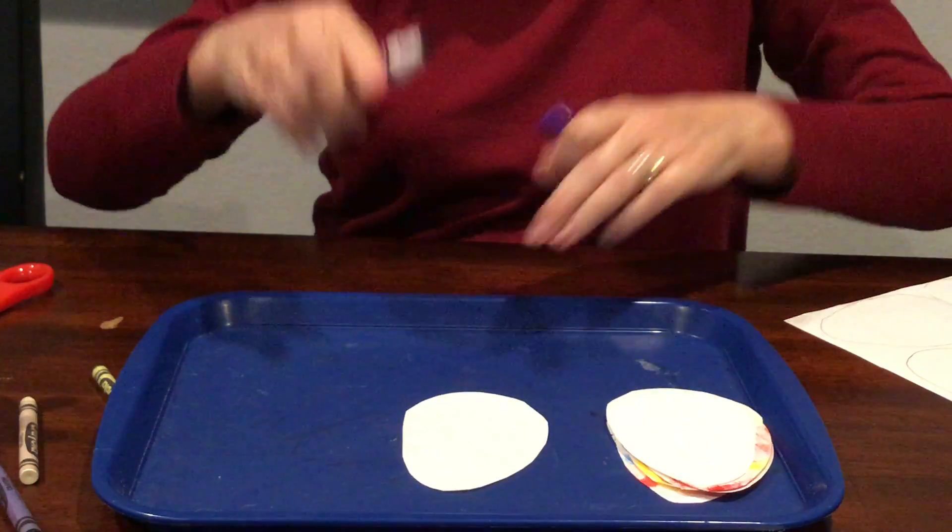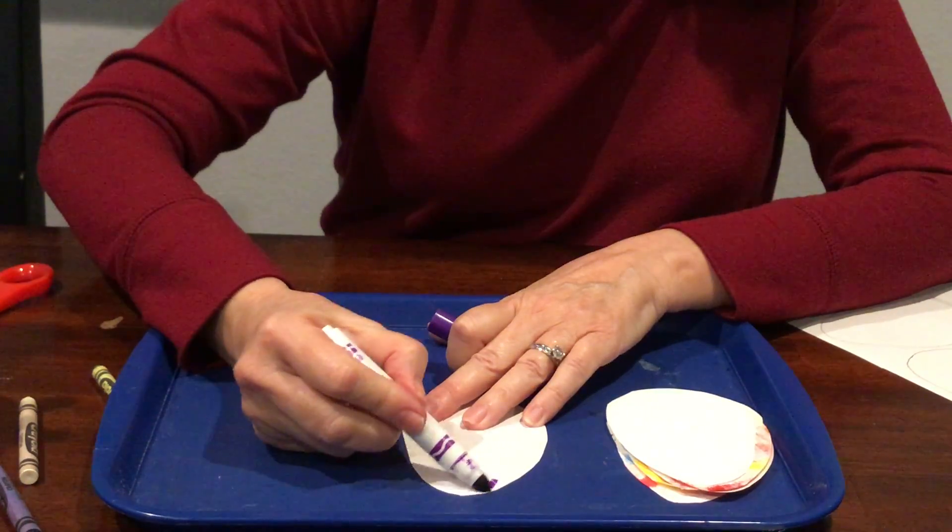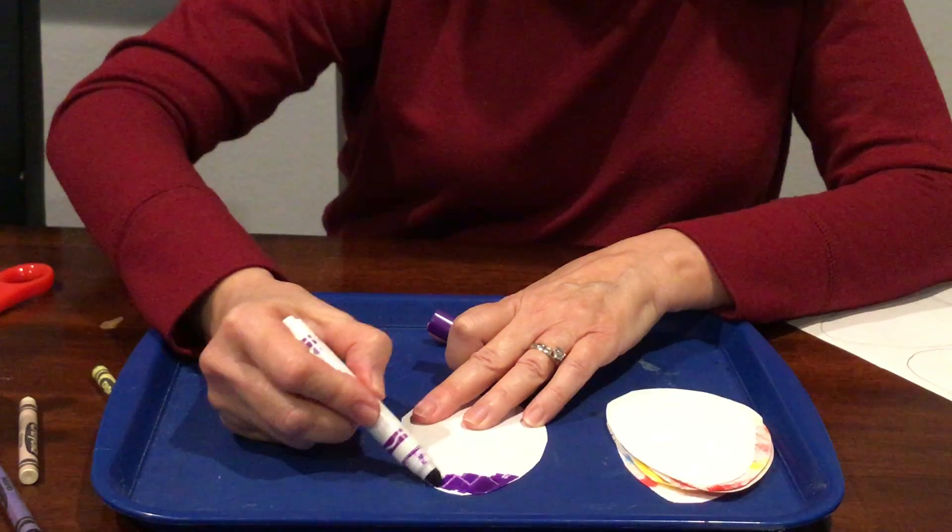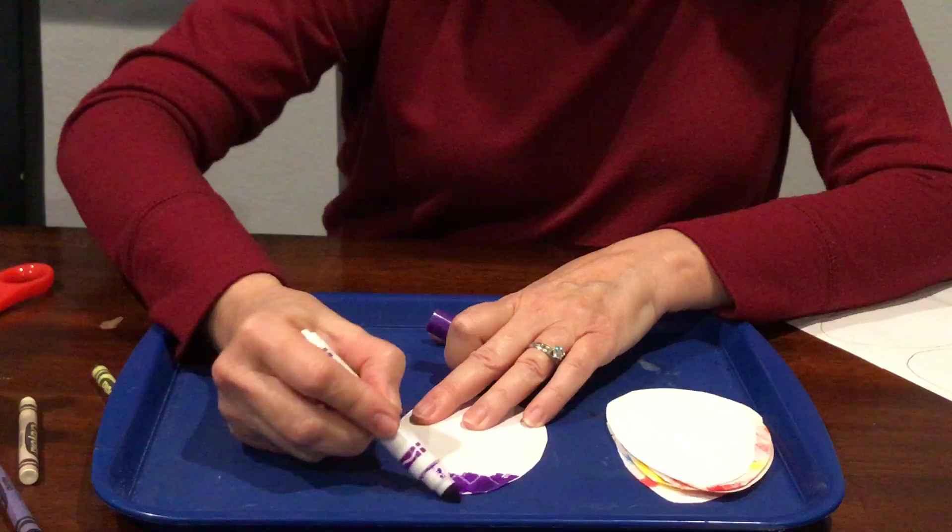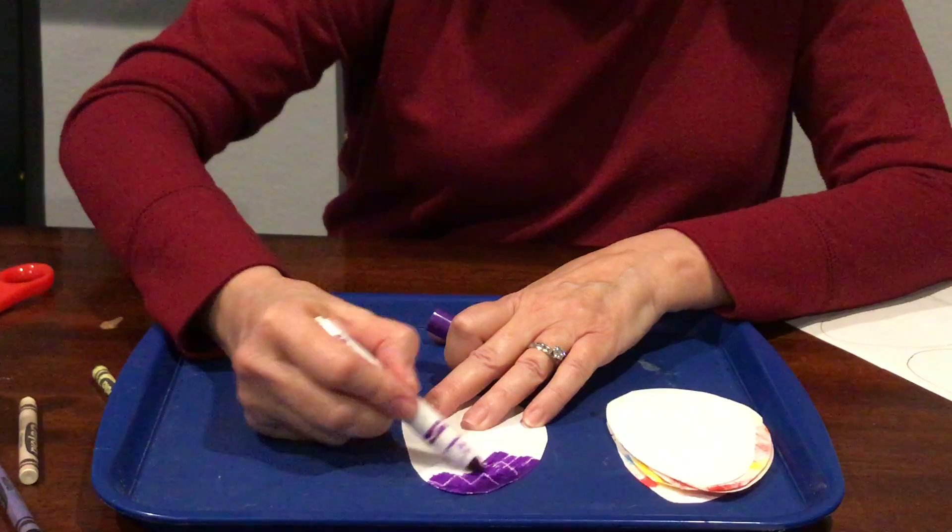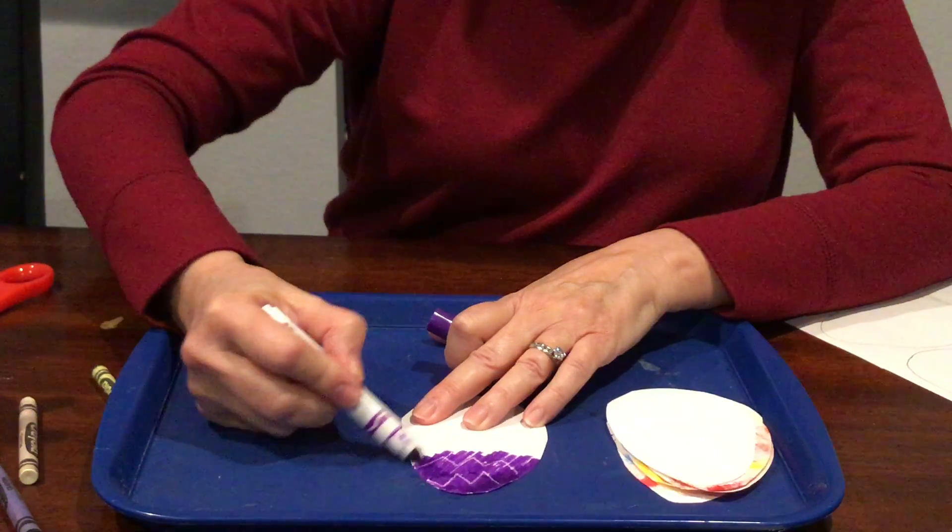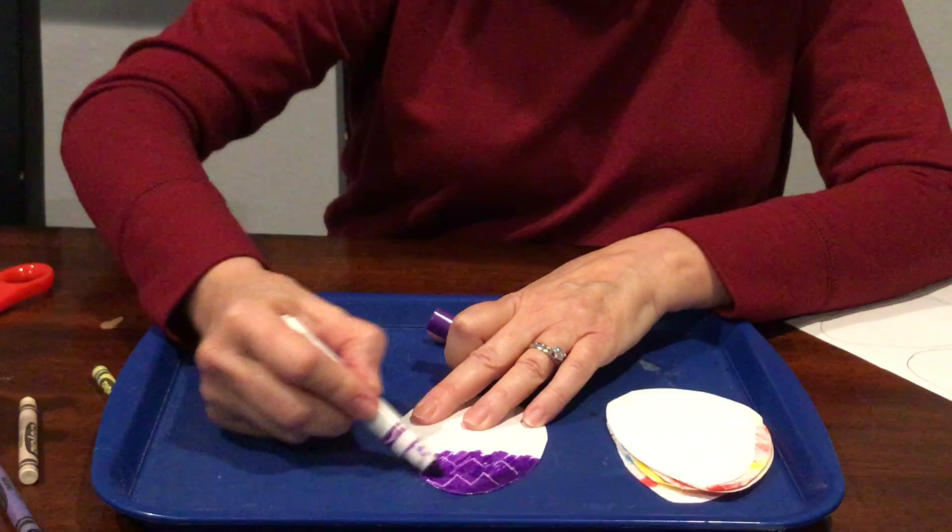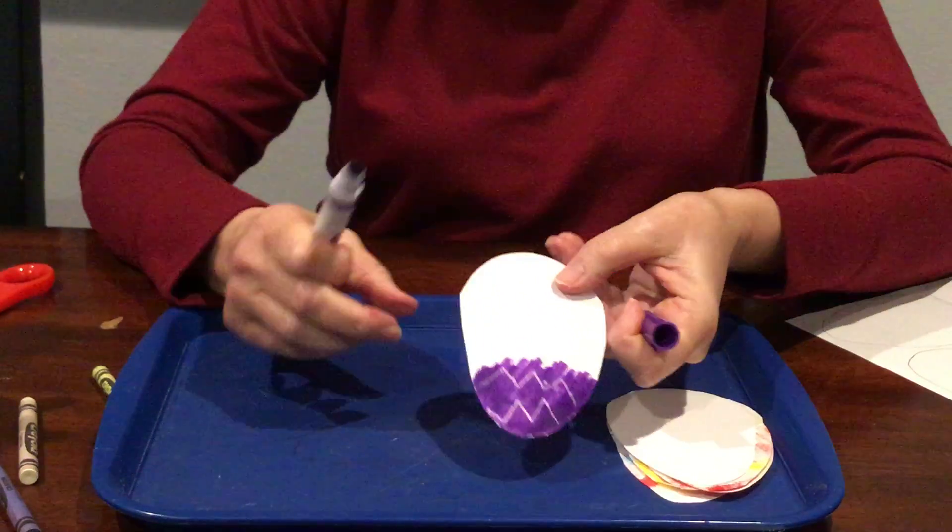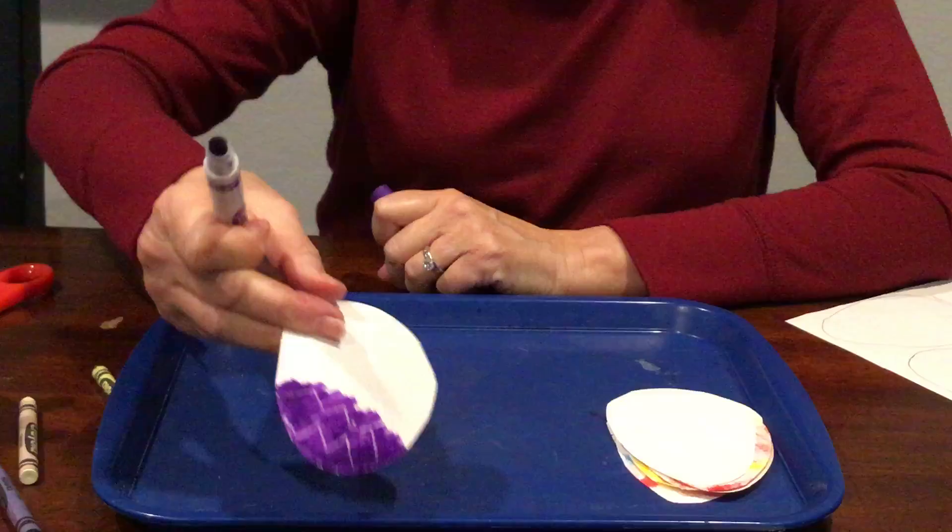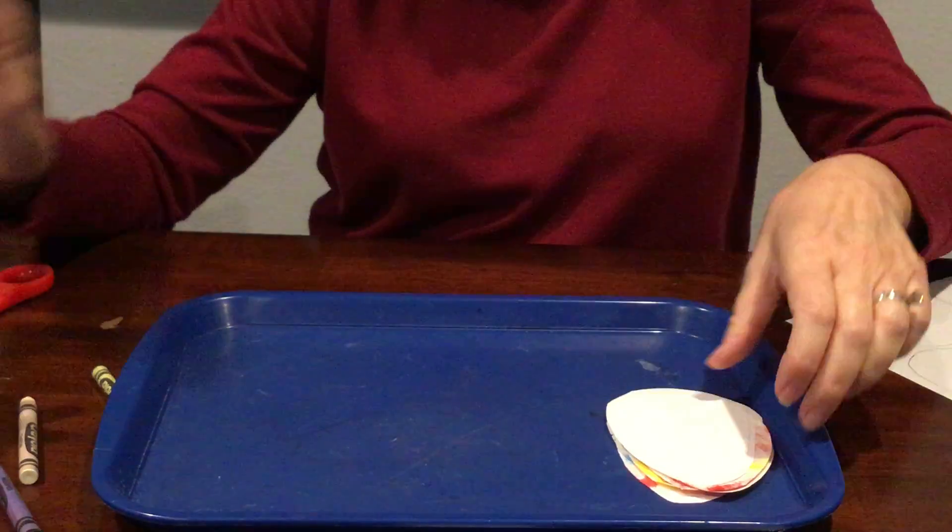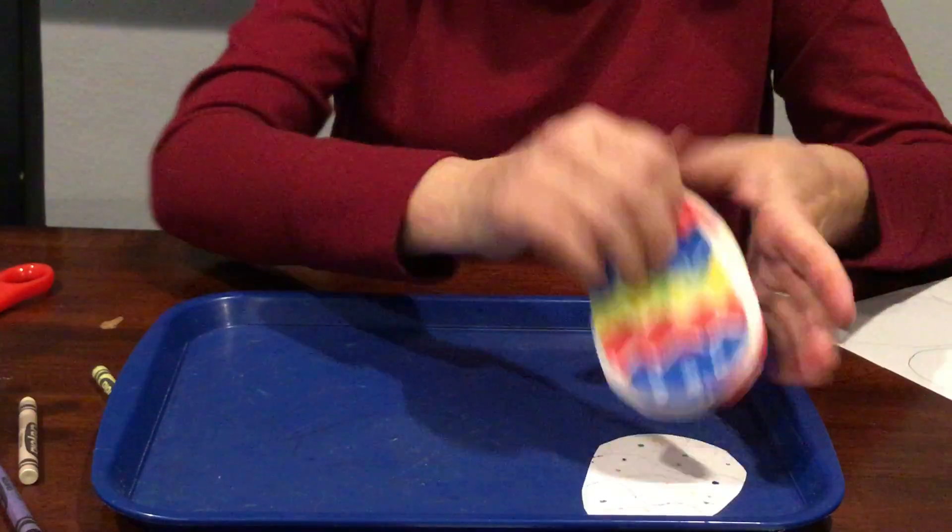Then if you get a marker and you color across, those white zigzags are going to show up. You can color your egg all one color or you can switch and do other colors. I'll show you a finished egg that I did earlier where I did it two different ways. Wherever you drew with the white crayon, it won't color over it with the marker.